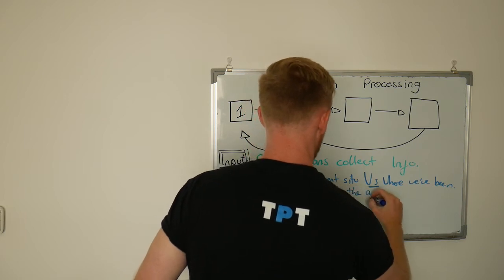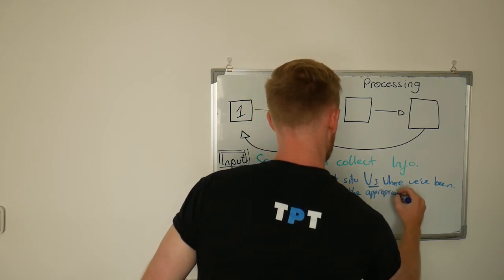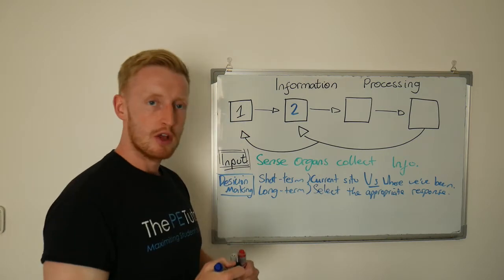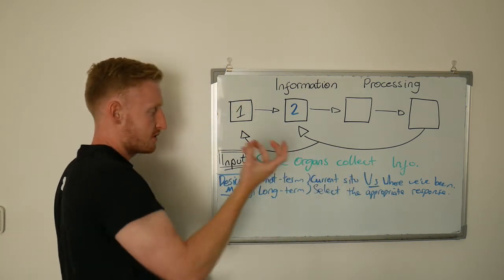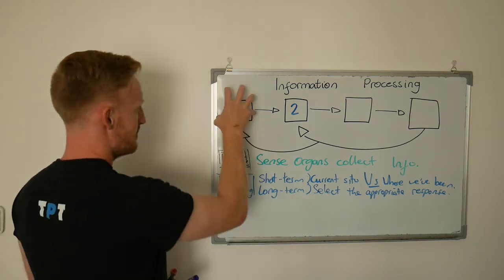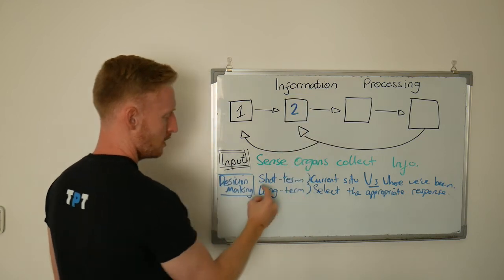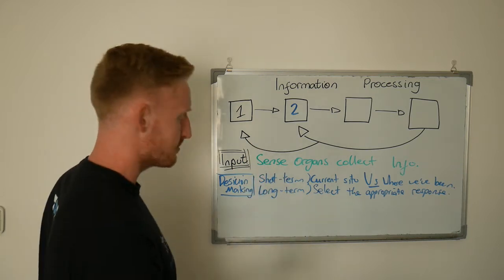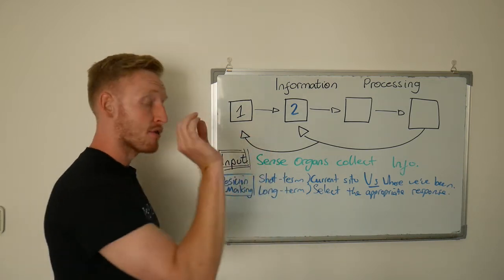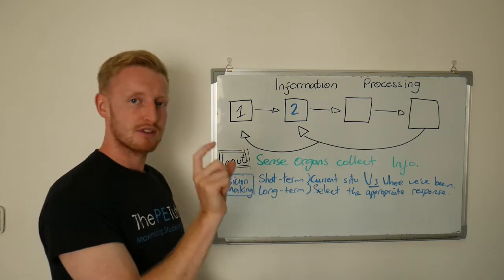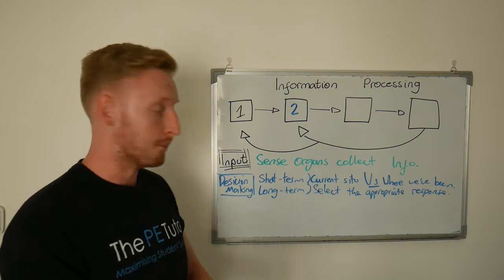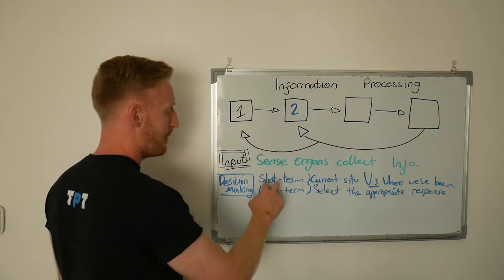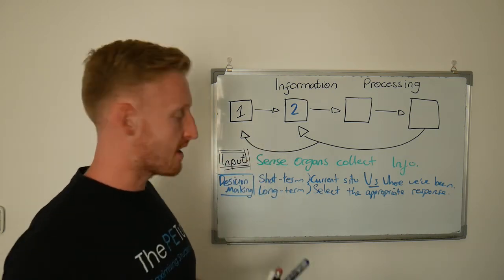Once you've done that and you've found an adequate match, you can then select the most appropriate response. So you're selecting the solution to the current problem that you've just discovered, because your sense organs have been picking up the information. Decision-making utilizes our short and long-term memory. Short-term being only about 7 to 10 seconds, maybe even about 30 seconds. You can remember about 7 to 10 things. Think of it like a phone number. If someone tells you a phone number, you might be able to remember it for 30 seconds, then it starts to get harder. You might be able to remember 7 to 10 of those numbers, but not necessarily the whole thing.